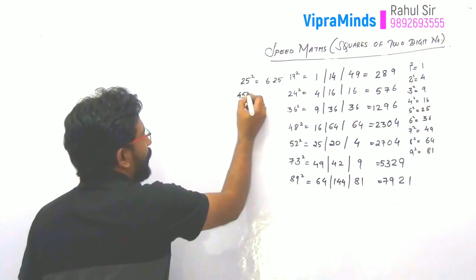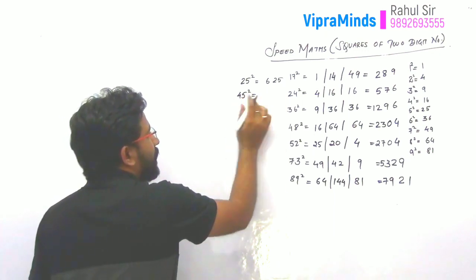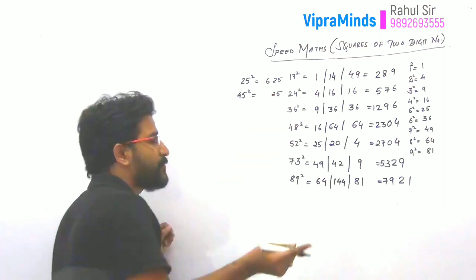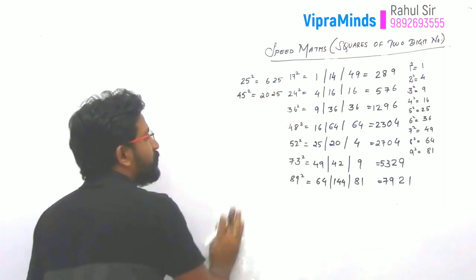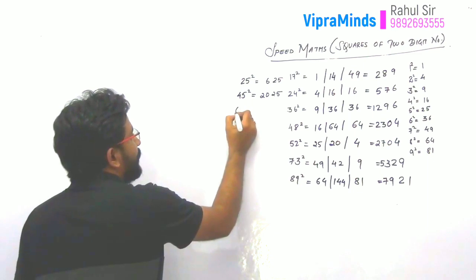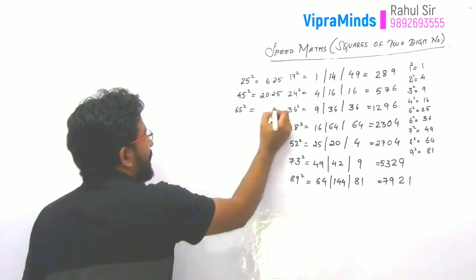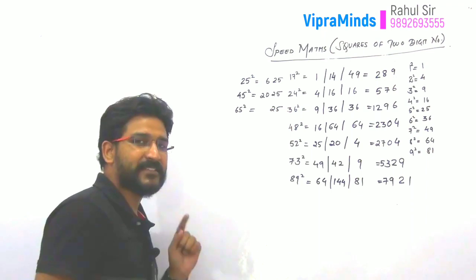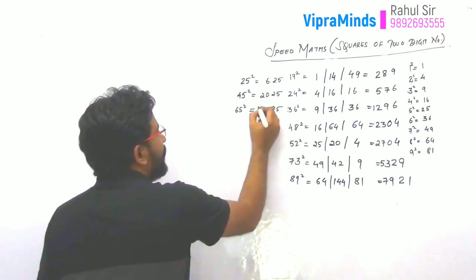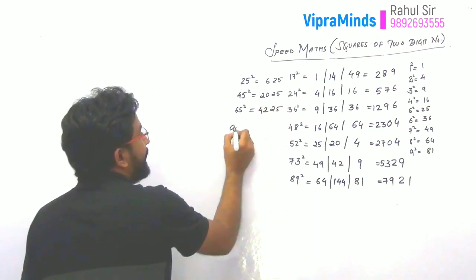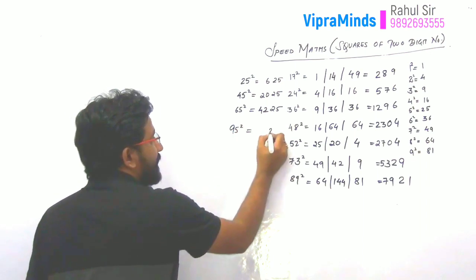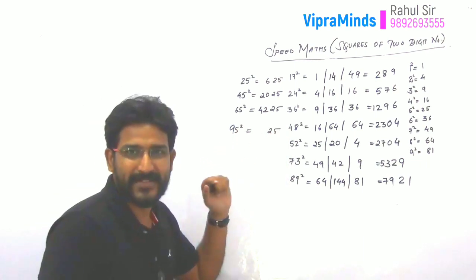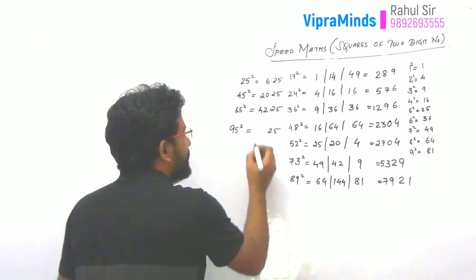For 45 squared: 5 squared is 25. The next number after 4 is 5, so 4 into 5 is 20. Answer is 2025. For 65 squared: 5 squared is 25. The next number after 6 is 7, so 7 into 6 is 42. Answer is 4225. For 95 squared: 5 squared is 25. The next number after 9 is 10, so 9 into 10 is 90. Answer is 9025.